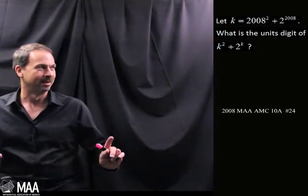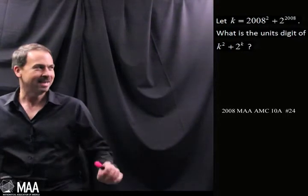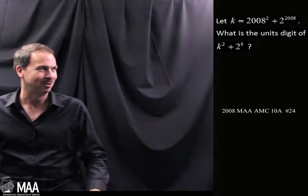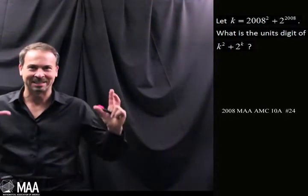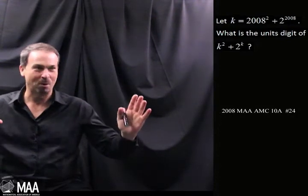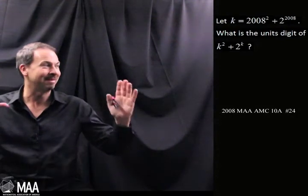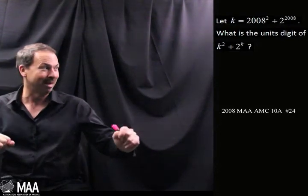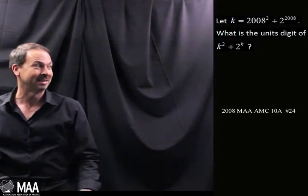Hang on. k is 2008 squared plus 2 to the 2008, so it's a ghastly number — but that's not the question. The question is about that ghastly number squared plus 2 to that ghastly number.